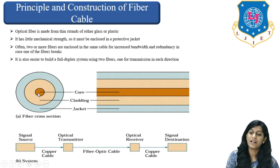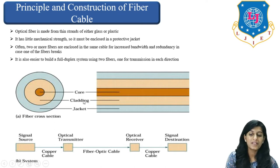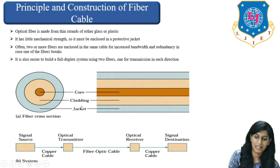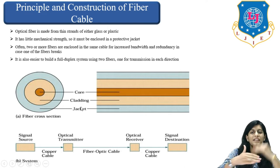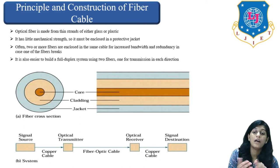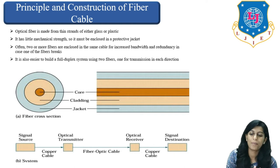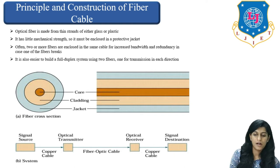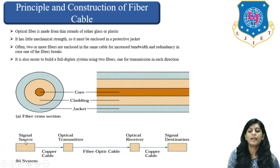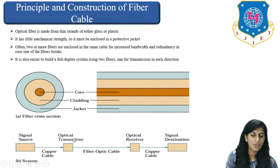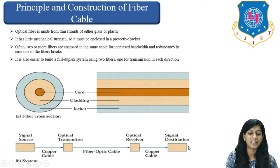The inner dark brown side is our core. The outer side is our cladding, and the outermost side is our jacket. It is covered layer by layer to protect the optical fiber, which is made of glass or plastic. The system works as follows: a signal source transmits to an optical transmitter, which sends to an optical receiver, and then to the signal destination.